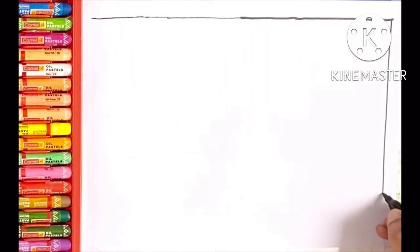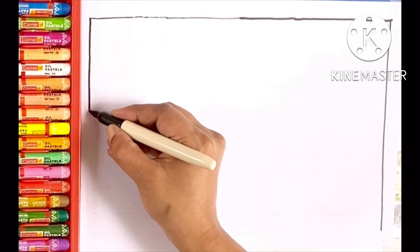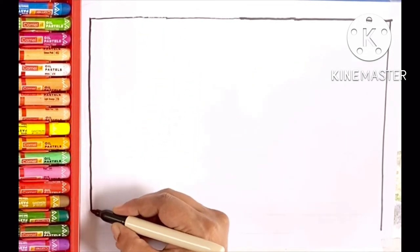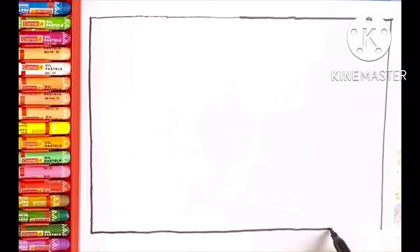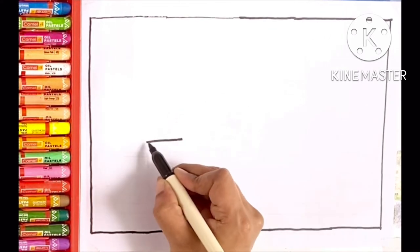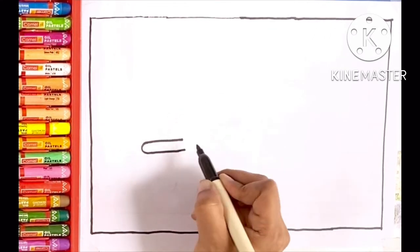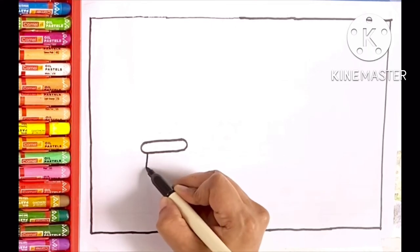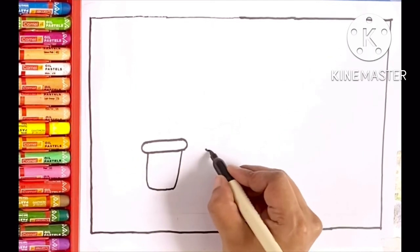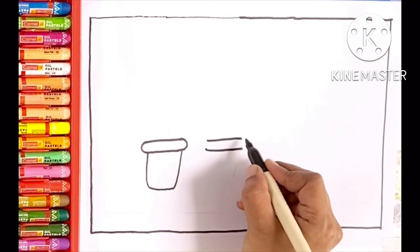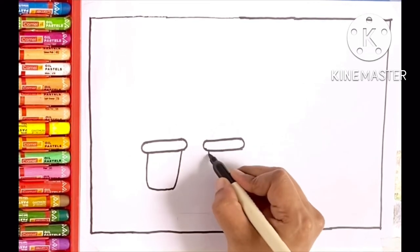Now we are going to draw a pot by using oval and U-shaped curve. Draw another three more pots by using oval and U-shaped curve.